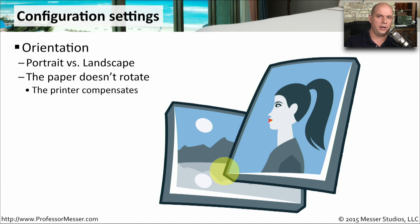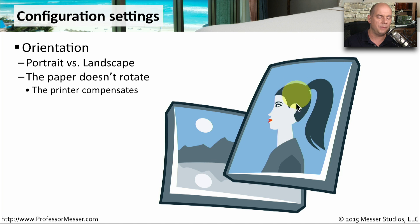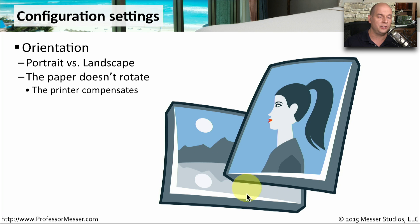Another important configuration setting when printing is the orientation. This designates whether we're printing in an up-and-down view — portrait mode — or side to side, which is landscape. Portrait is called portrait because that's normally how we see portraits of people, longer towards the top and bottom than on the sides. Landscape is how you might print out a landscape scene, with a wider view left to right and a smaller perspective from top to bottom.